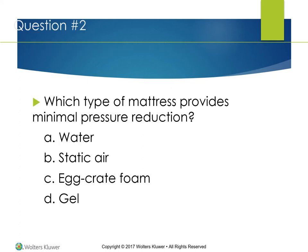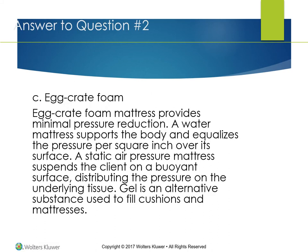Question: Which type of mattress provides minimal pressure reduction — water, static air, egg crate foam, or gel? Egg crate foam is the answer; this mattress provides minimal pressure reduction. A water mattress supports the body and equalizes the pressure per square inch over its surface. A static air mattress suspends the client on a buoyant surface, distributing the pressure on the underlying tissue. Gel is an alternative substance used to fill cushions and mattresses.